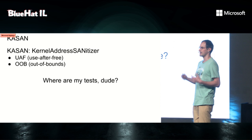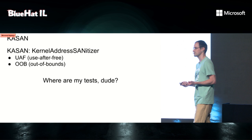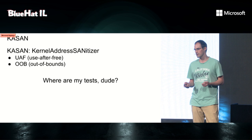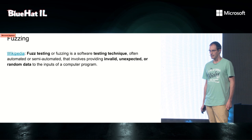We couldn't find test suites for the kernel, or we couldn't build them, or we couldn't run them. We booted the kernel, ran some user space programs, found a few bugs with address sanitizer, but it felt like it's not enough. Around the same time, we started looking at fuzzing in user space as a technique to actually get some load and provoke and detect more bugs.